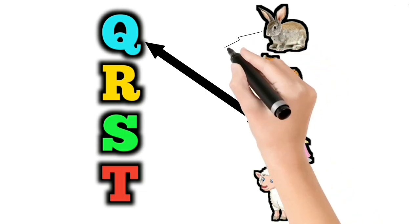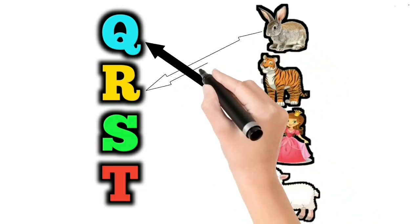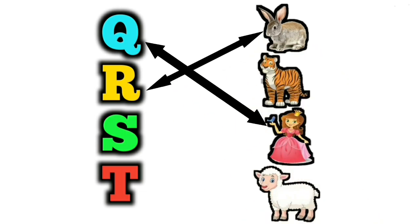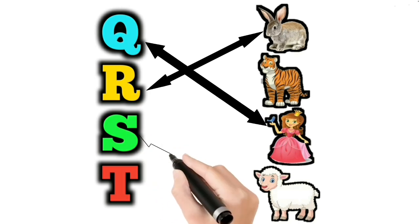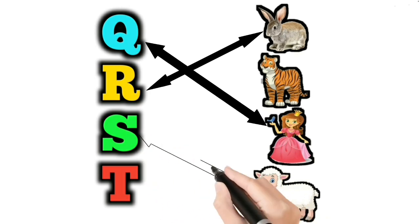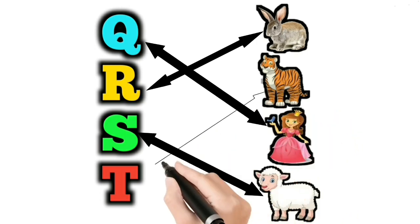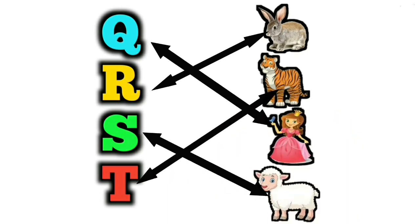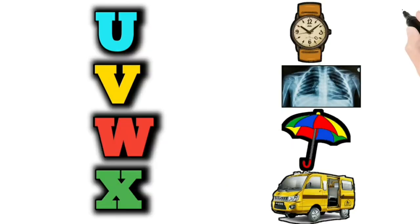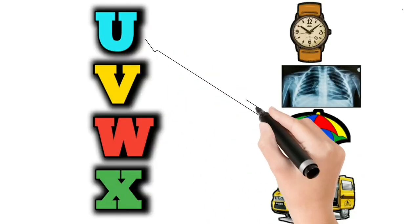R for Rabbit. Y for Sheep. T for Tiger. U for Umbrella.